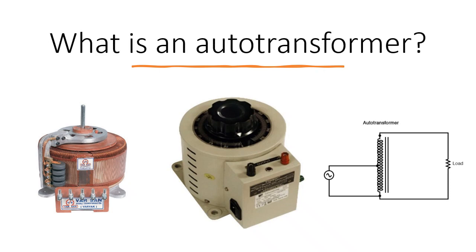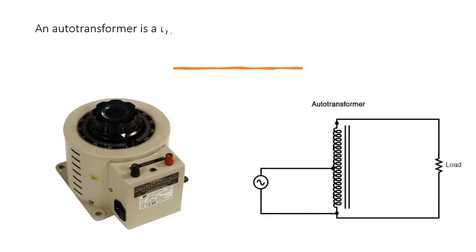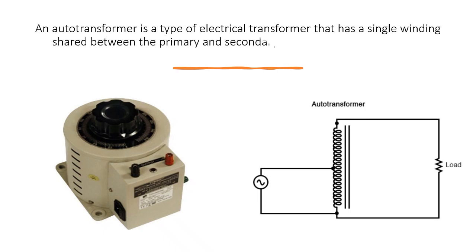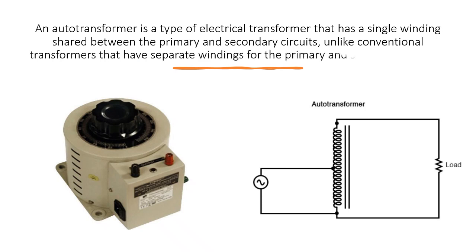What is an autotransformer? An autotransformer is a type of electrical transformer that has a single winding shared between the primary and secondary circuits, unlike conventional transformers that have separate windings for the primary and secondary circuits.